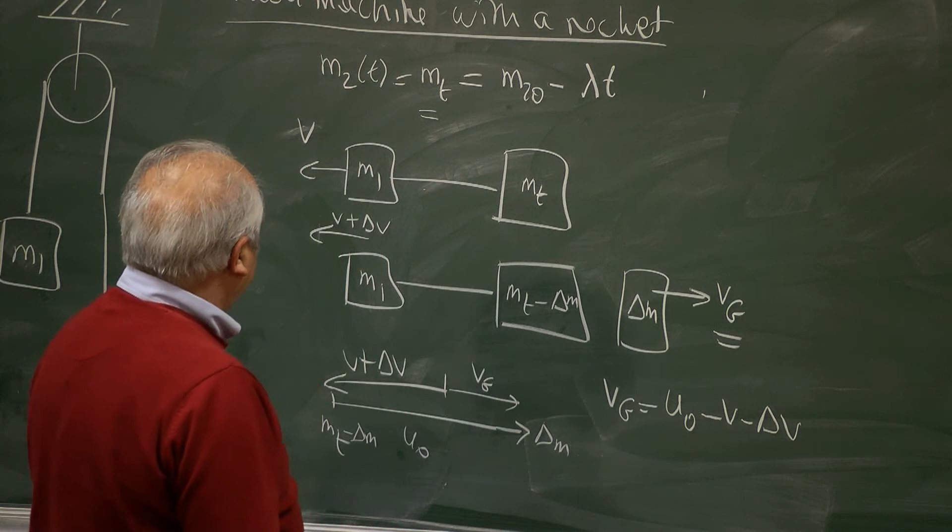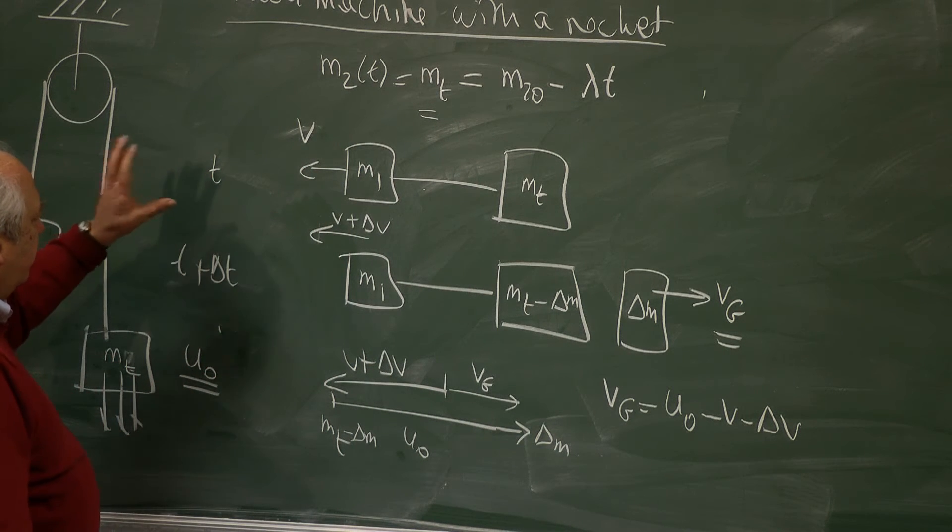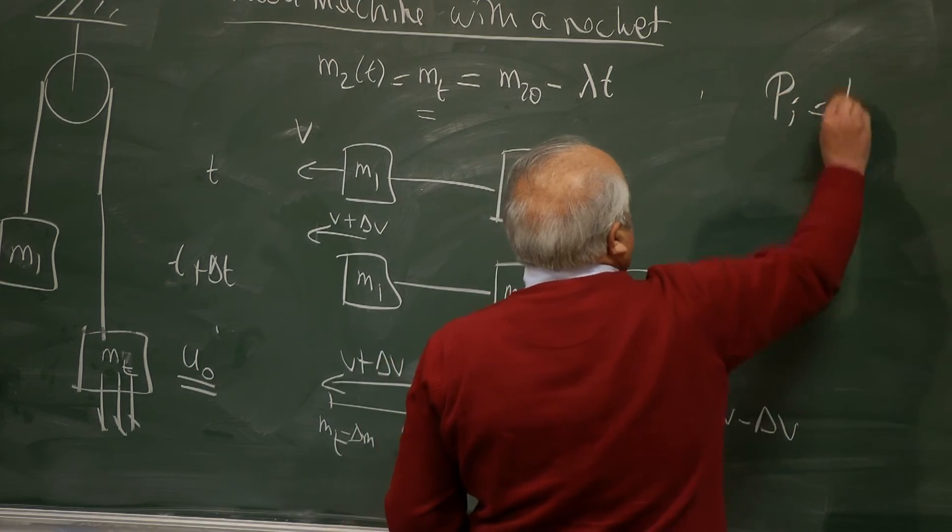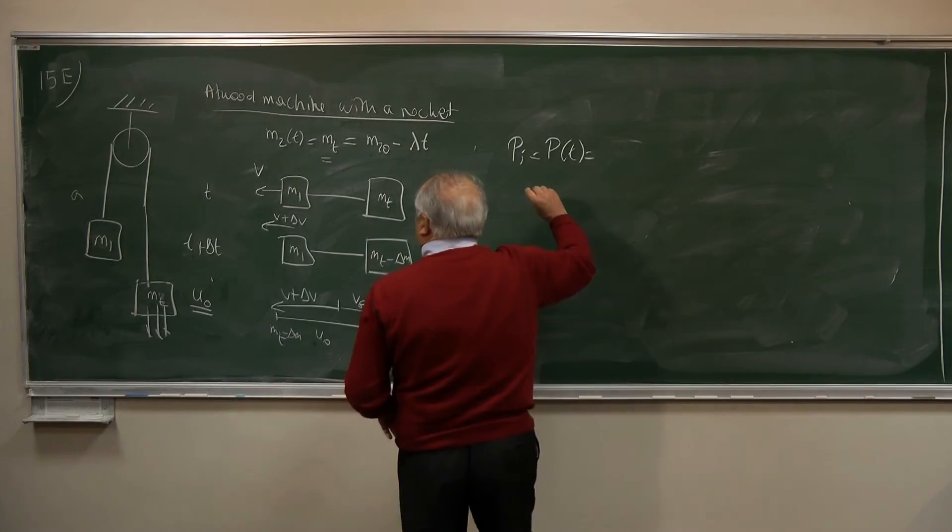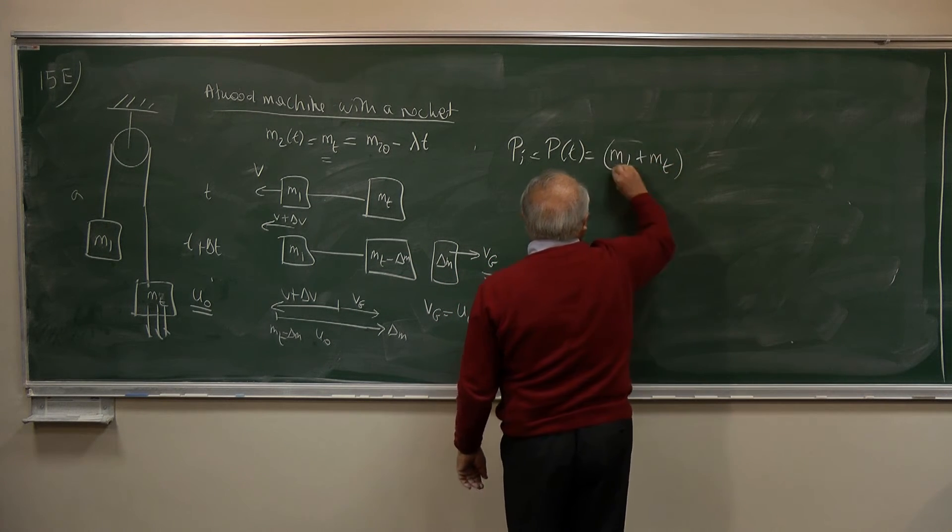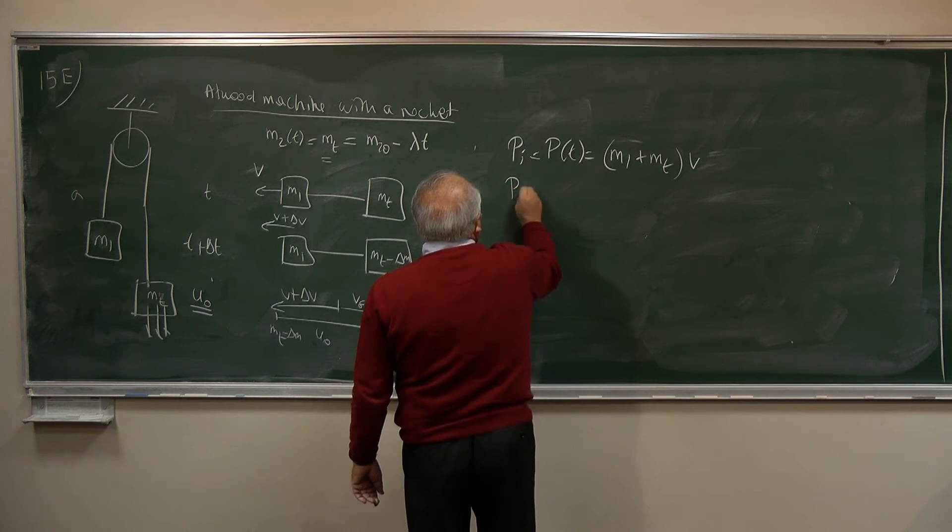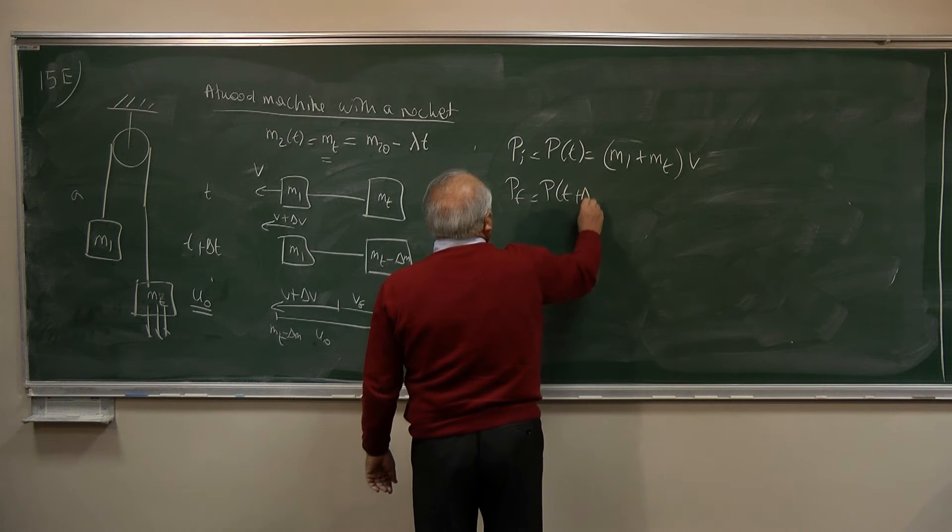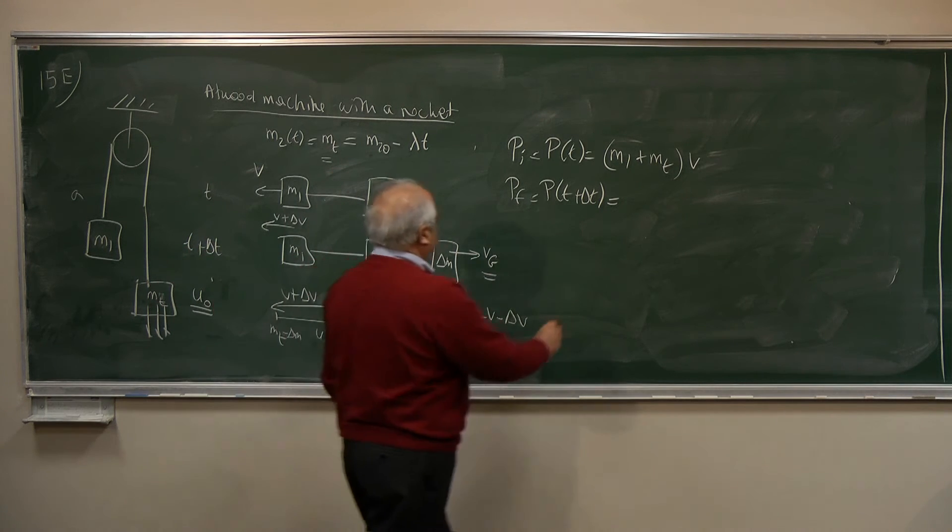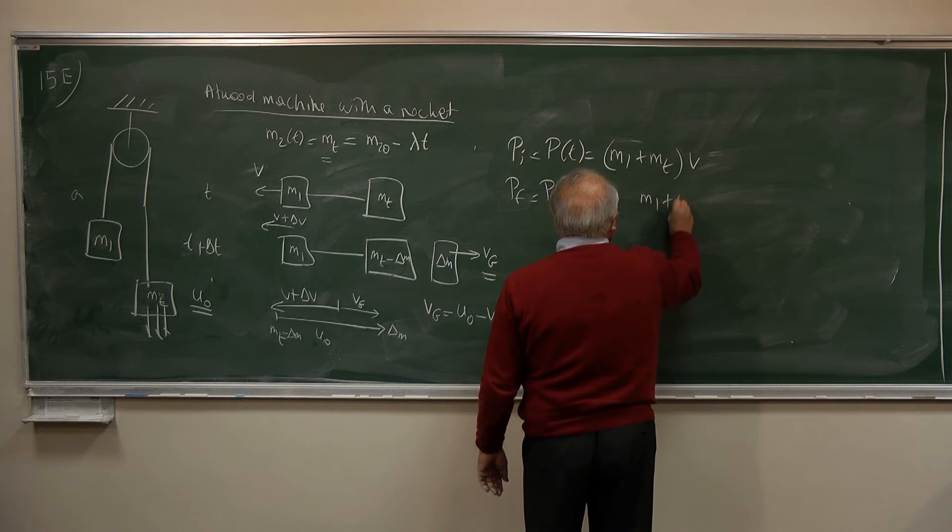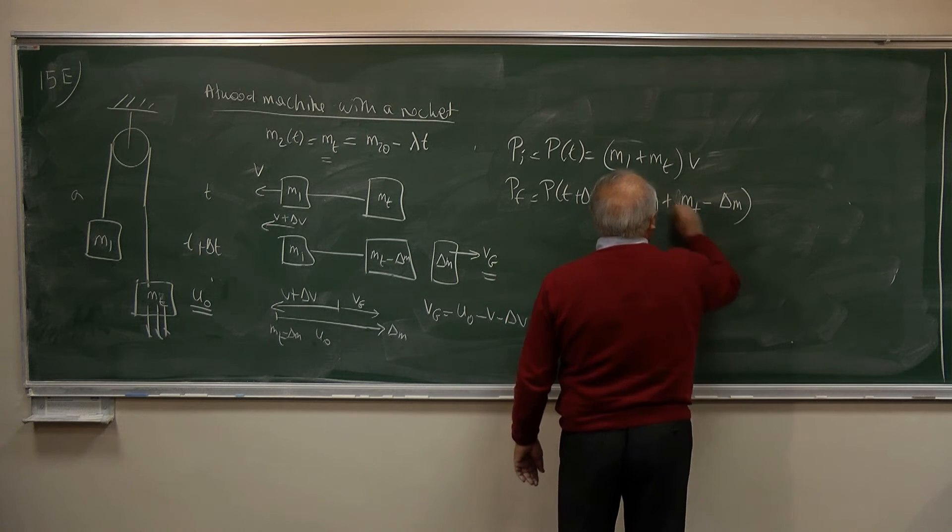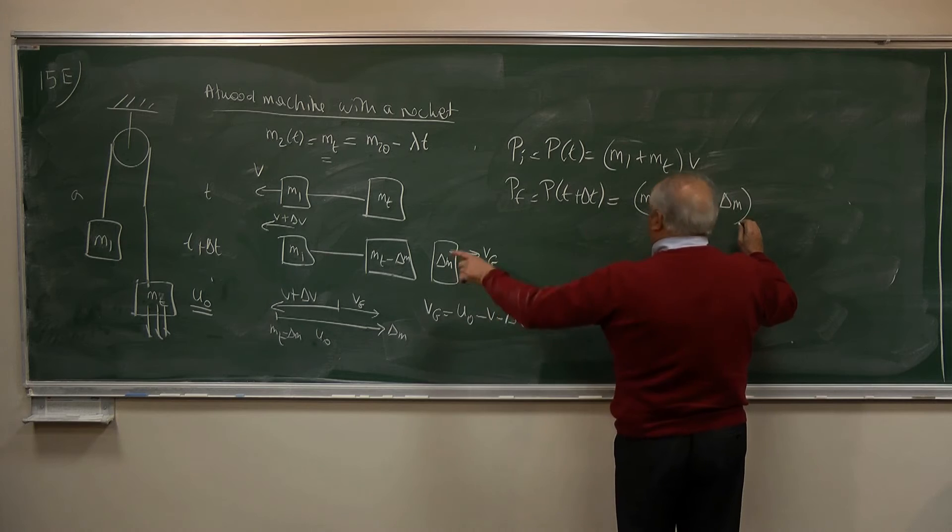So we can write the momentum, total momentum of the system at time T and at time T plus delta T. So P initial is the momentum at time T. That's equal to M1 plus MT times V. Final momentum at T plus delta T equals the momentum of this system. So M1 plus MT minus delta M times V plus delta V.